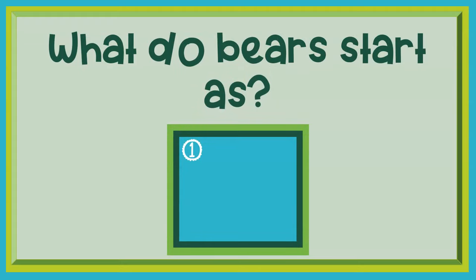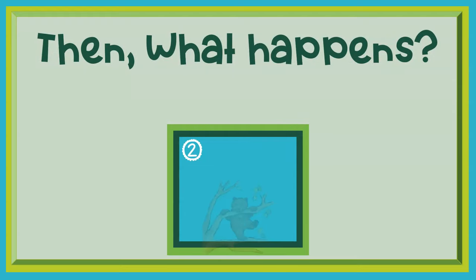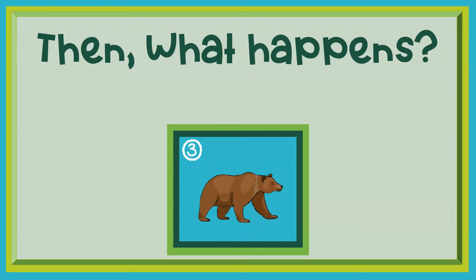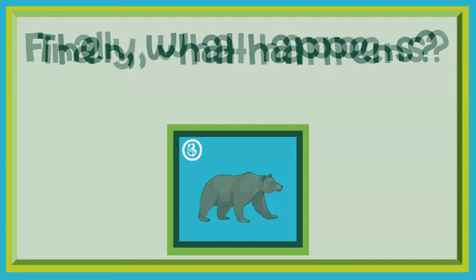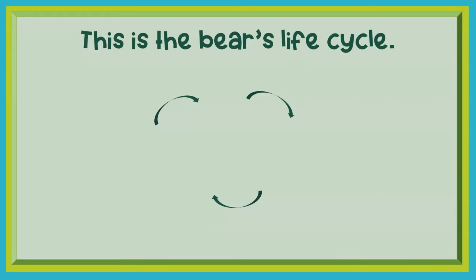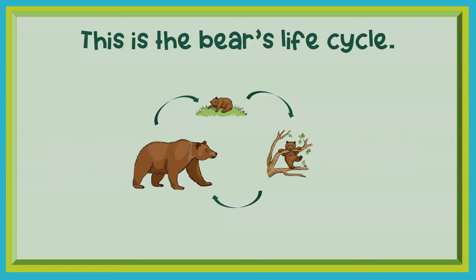What do bears start as? Bears are born as little cubs. Then what happens? They grow up learning things from their mothers and fathers. Then what happens? They become adult bears. Finally, what happens? The adult bears have baby cubs of their own. This is the bear's life cycle: cub, growing up, adult bear who has a new cub.